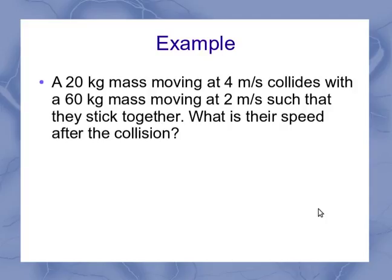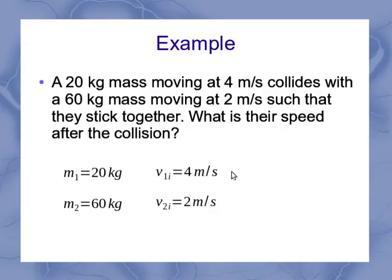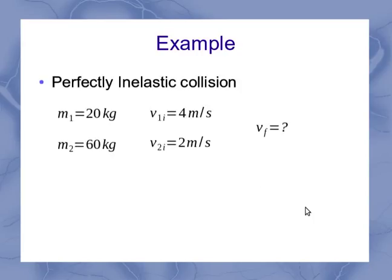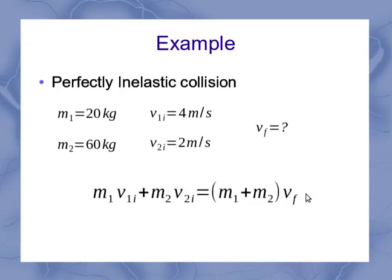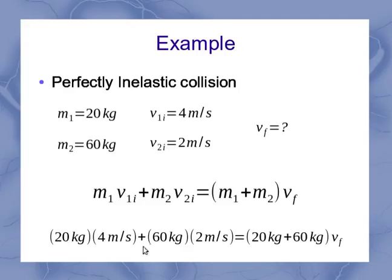So here's an example. I've got a 20 kilogram mass moving at 4 meters per second, and it's going to collide with a 60 kilogram mass moving at 2 meters per second, such that they stick together. What is their speed after the collision? Well, if I write down my knowns here, I can put in my two masses. We're going to call this first one to be mass 1. The second one is mass 2. I can then associate that with my initial velocities for each object. And then I'm solving for my final velocity. Because this is a perfectly inelastic collision, and I've got those as my knowns, I can take my special case equation here and plug in my knowns into that equation. In this case, I've got 20 kilograms times 4 meters per second plus 60 kilograms times 2 meters per second. And that's going to equal the total of 20 kilograms plus 60 kilograms times my final velocity.